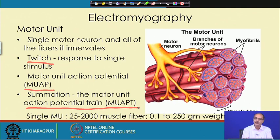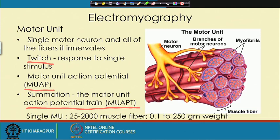A single motor unit can be connected to as few as 25 muscle fibres or up to 2000 muscle fibres, and if we look at the weight involved it could range from 0.1 gram to 250 grams. So depending on the span of that connection, a varied number of muscle fibres can be excited by one motor neuron.